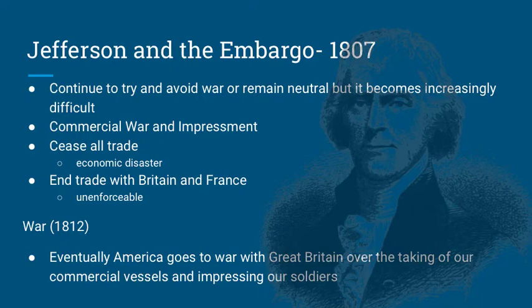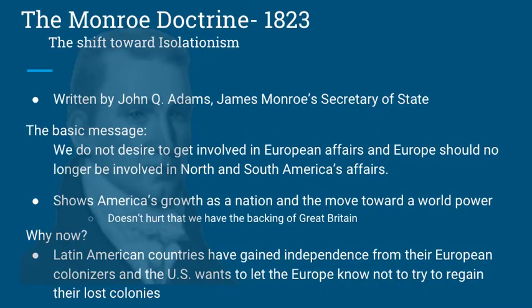That leads us to the Monroe Doctrine and James Monroe. As we talked about in previous videos, the War of 1812 ends and everything goes back to the way it was. Britain and France aren't going to be attacking our shipping because they're not at war anymore, so things calm down for a bit. The Monroe Doctrine is kind of a shift toward isolationism - not complete isolationism, we continue to trade - but it's really trying to say the Atlantic Ocean is your boundary. Europe, you stay on your side; we'll stay on ours. It's known as the Monroe Doctrine, but it's actually written by John Quincy Adams, his Secretary of State.